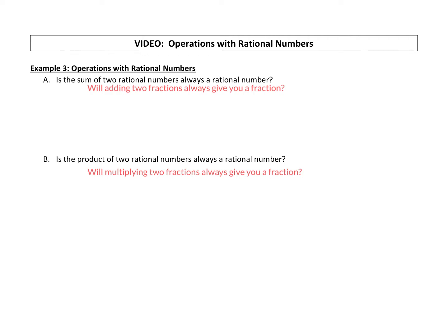So part A is the sum, meaning adding two rational numbers, always a rational number. You can think about it as if you're adding two fractions, always give you a fraction. Well, let's take a look at this and test it out. Let's add two fractions together.